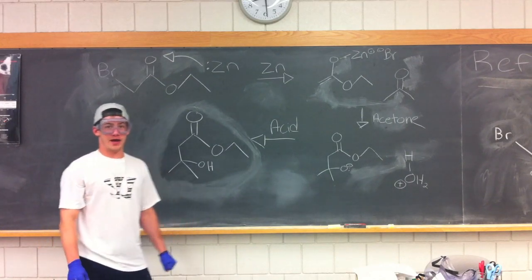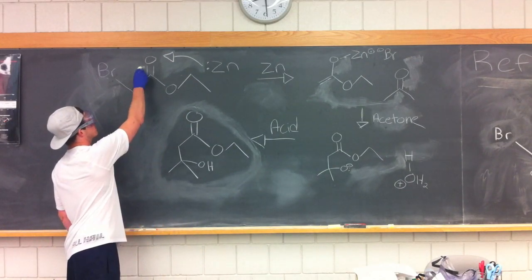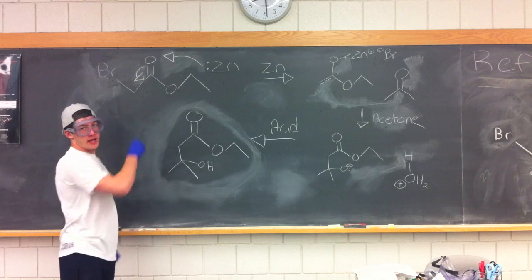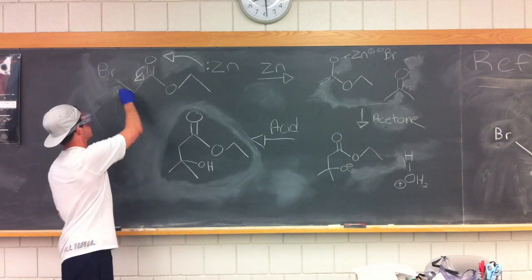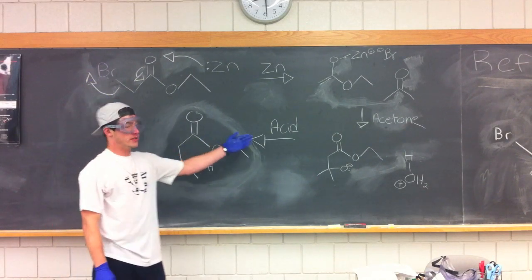One of the bonds on the oxygen swings down and knocks off the bromine in the solution, forming the enolate.